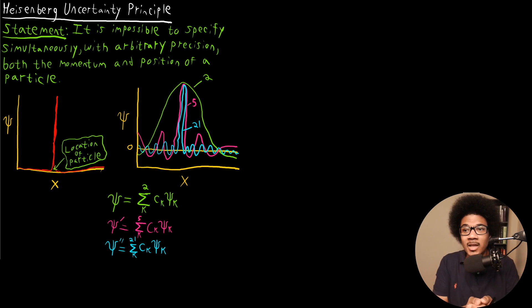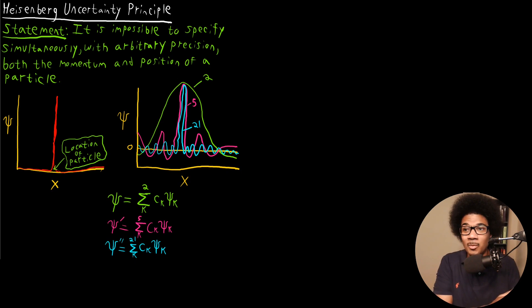This holds true whether we're talking about microscopic or macroscopic particles. As we'll see soon in an example, even in a macroscopic world there's some uncertainty with these moving particles — it's just negligible. But in the quantum realm, where we're dealing with really small particles, it is going to be sizable.